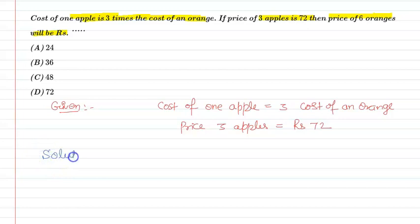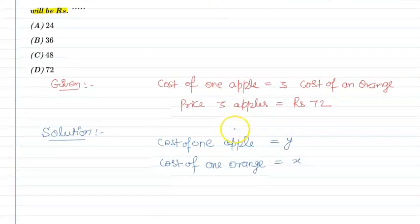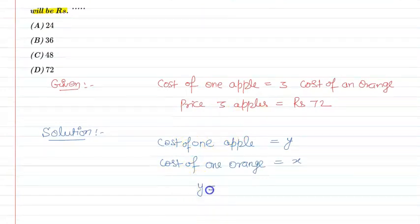In the solution, first of all, let cost of one apple equal to y and cost of one orange equal to x.